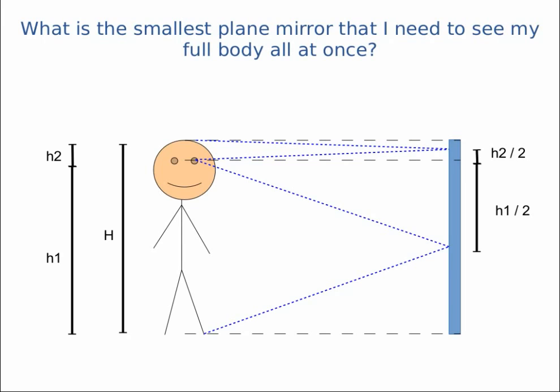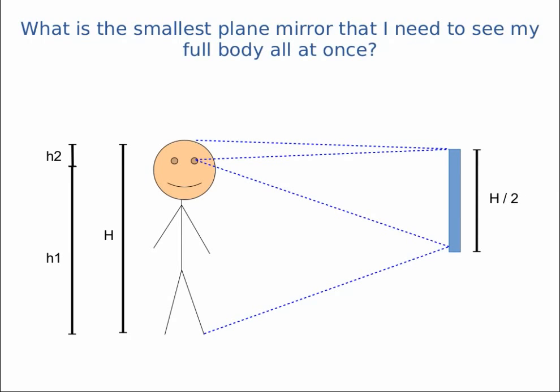Well, in that case then, the minimum height of the mirror that I need is just h1 plus h2 over 2, and we know that h1 plus h2 is just my height. So cleaning up the diagram a little bit, I need a mirror that is exactly half my height.